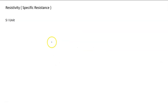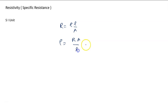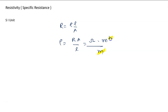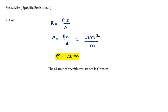Again using the formula R = ρL/A, we can write ρ = R × A / L. R is the resistance measured in Ohms, area is in meter squared, and length is in meters. Cancelling one meter, the unit of resistivity is Ohm·meter. So Ohm·meter is the unit of specific resistance or resistivity.